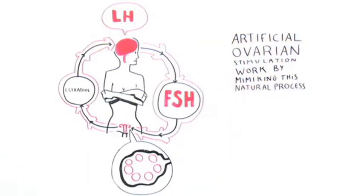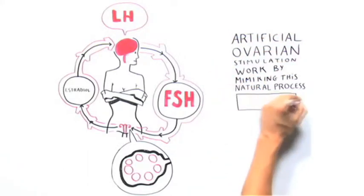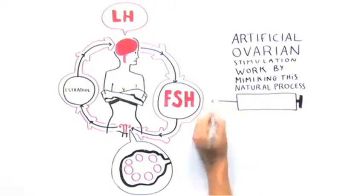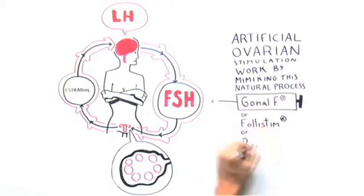Artificial ovarian stimulation works by mimicking this natural process. We use injectable gonadotropins, usually FSH analogues such as Gonal-F, Follistim, or Bravelle.